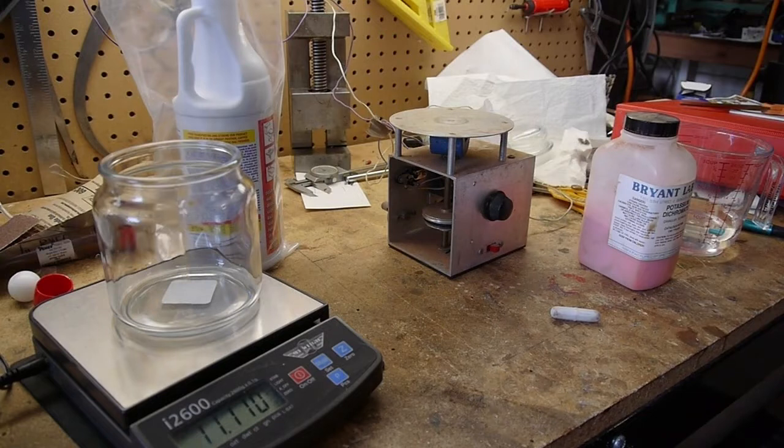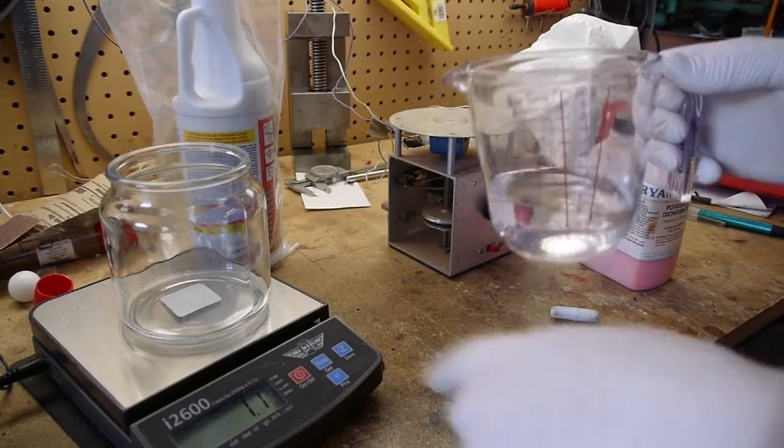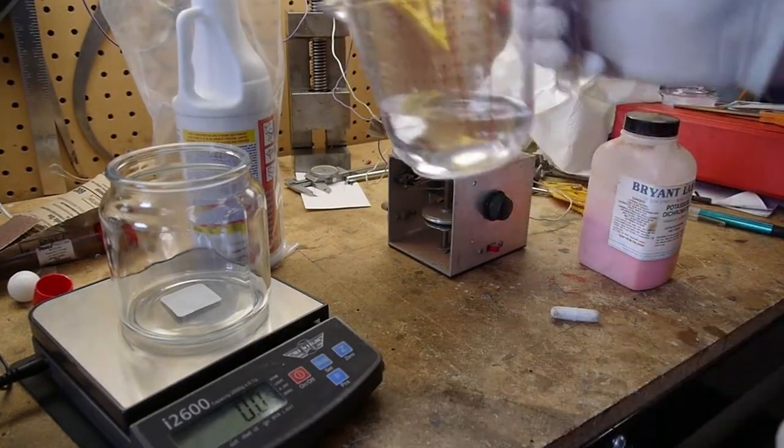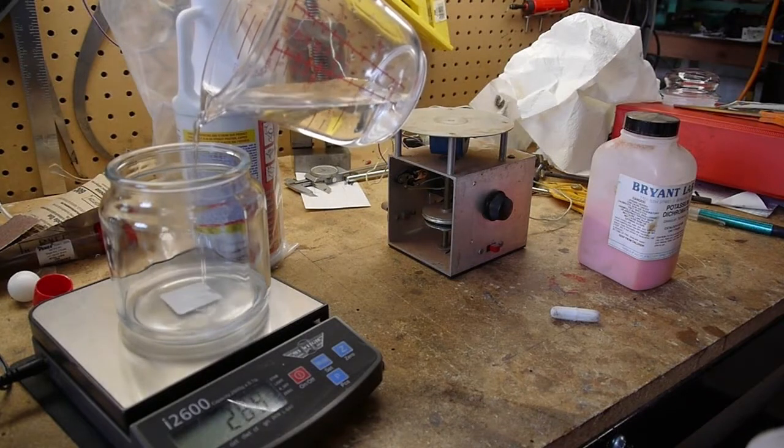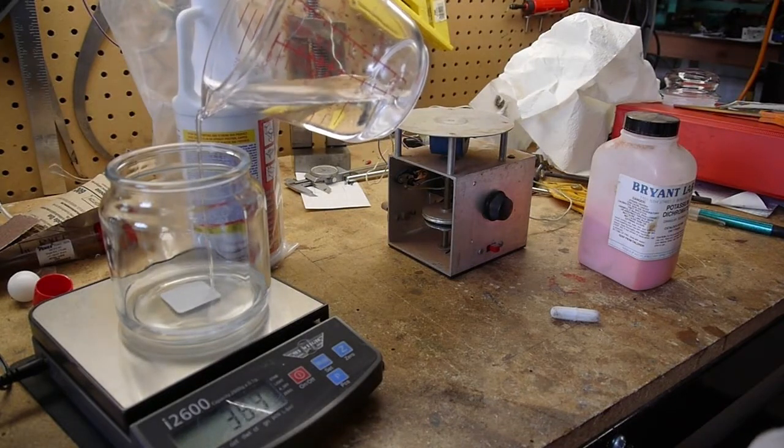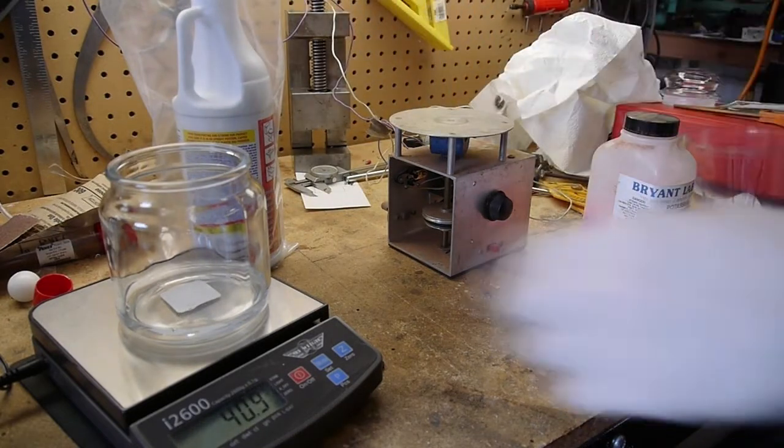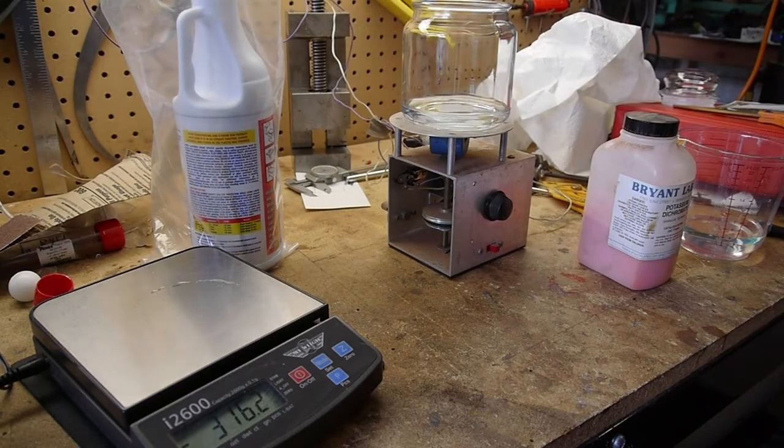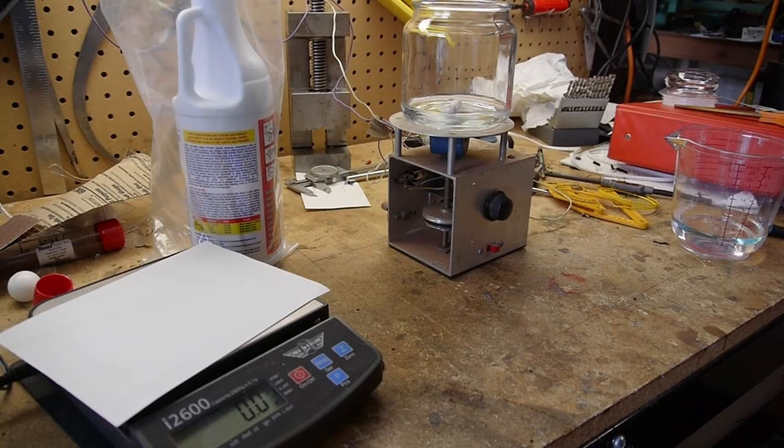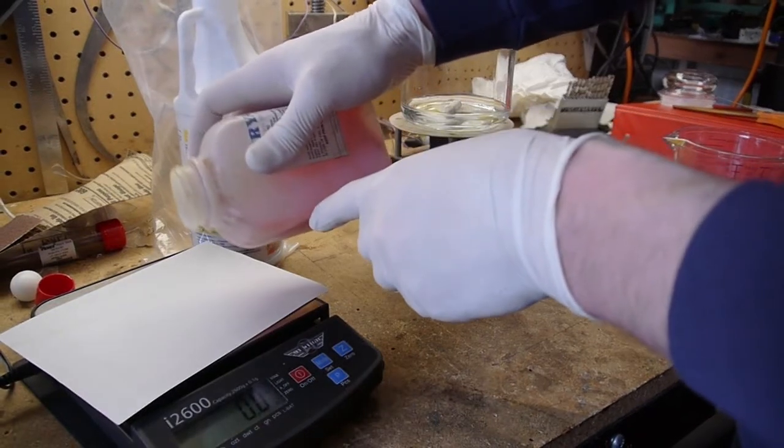Okay, so we're going to measure out 40 grams of water. Okay, 25 grams of potassium dichromate.